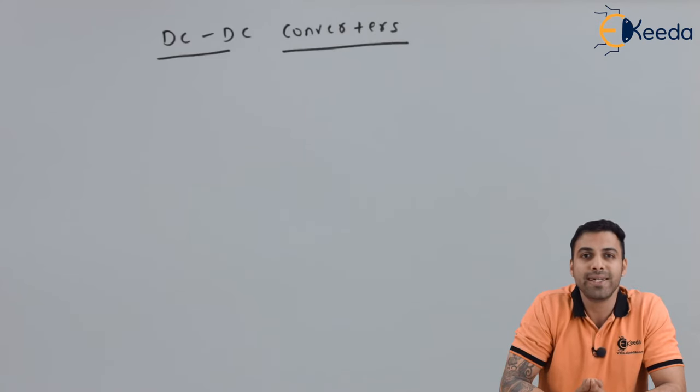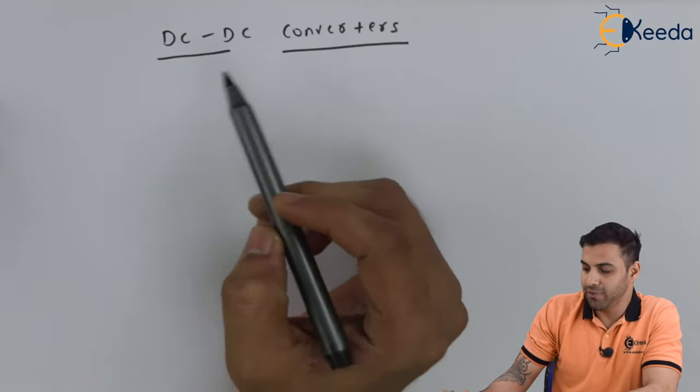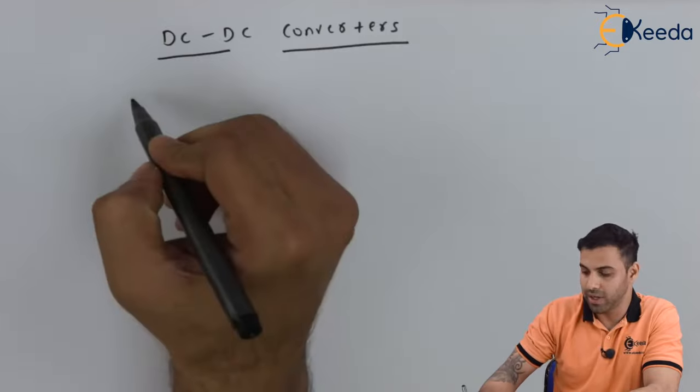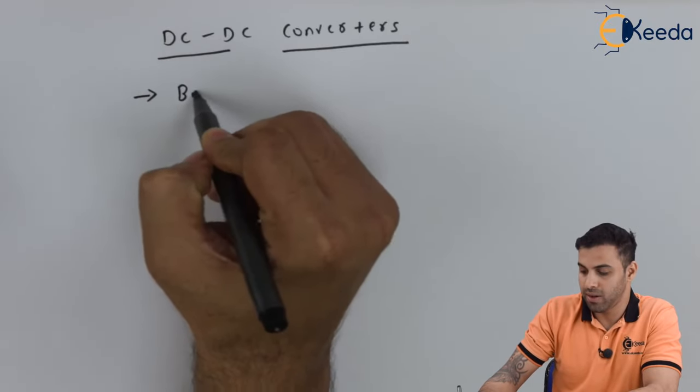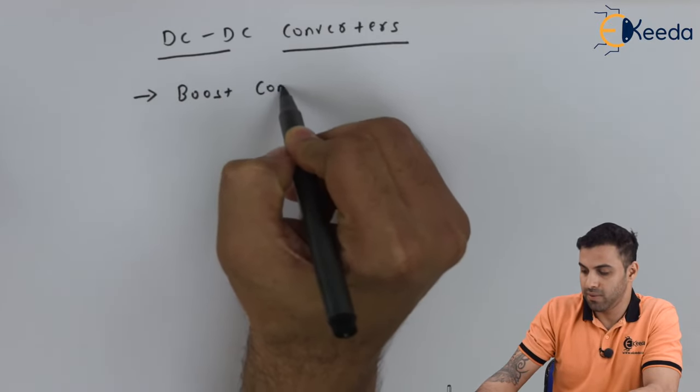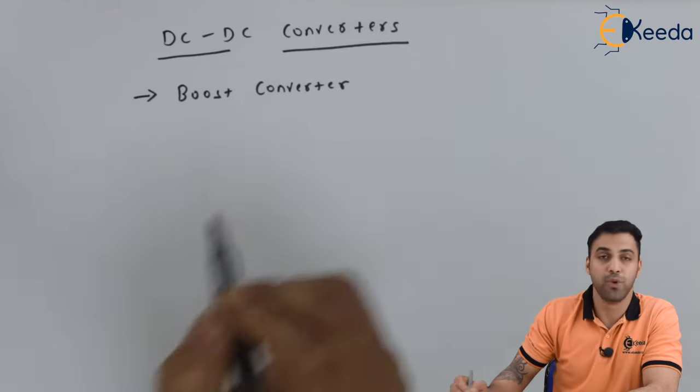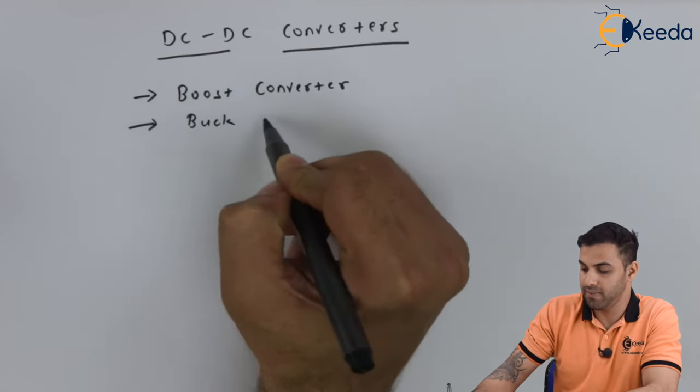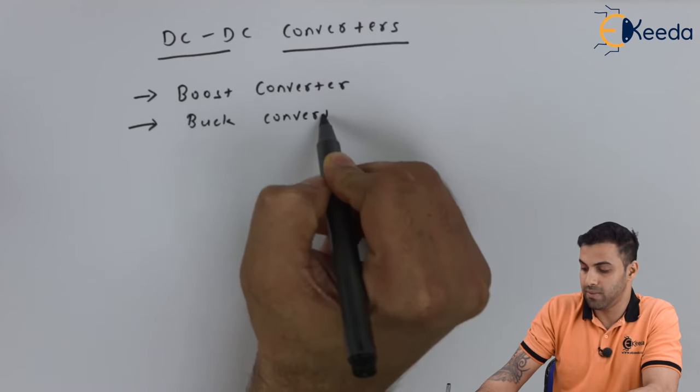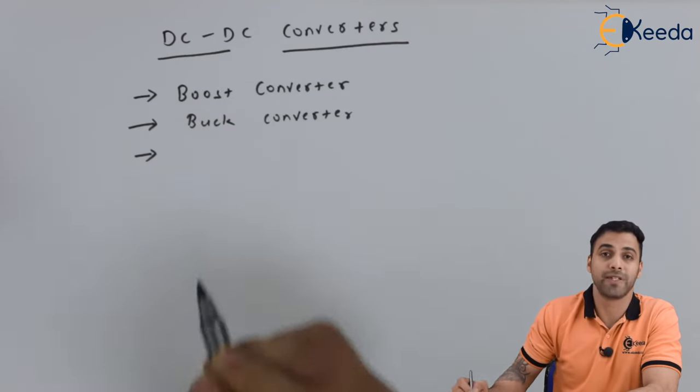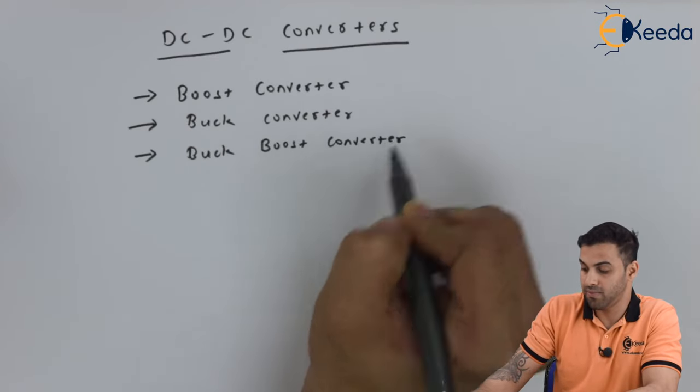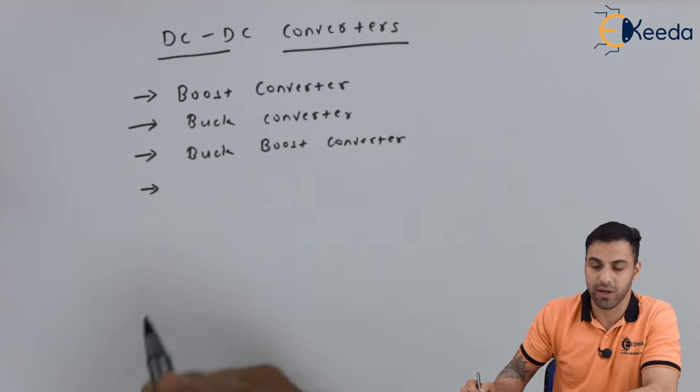First of all, our DC-DC converters are divided into several parts. Let's see what those parts are. So friends, if you can see here, DC-DC converters are divided into number one: boost converter, number two is a buck converter, number three is buck-boost converter, and number four would be a cuk converter.